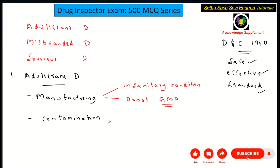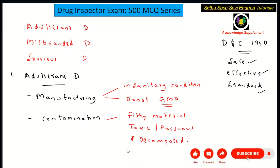The second keyword is contamination. If the drugs are contaminated with any filthy material, filthy substance, toxic substance, poisonous substance, colors which are not prescribed, or a decomposed substance — such drugs can be called adulterant drugs. So remember these two keywords: manufacturing and contamination.